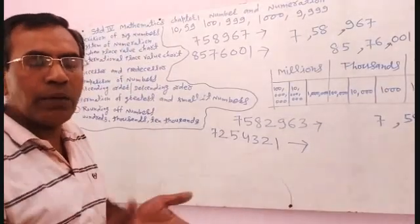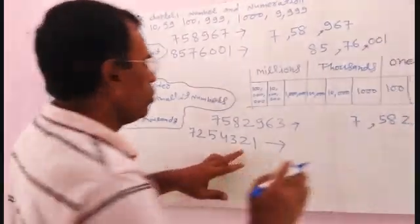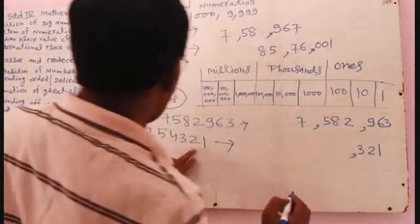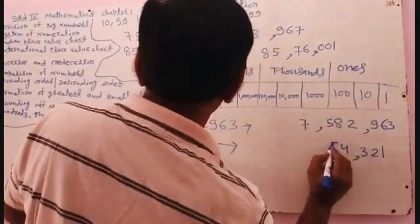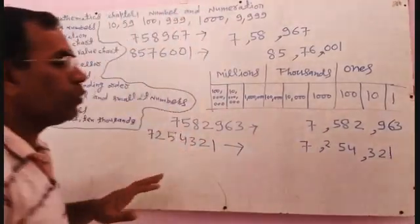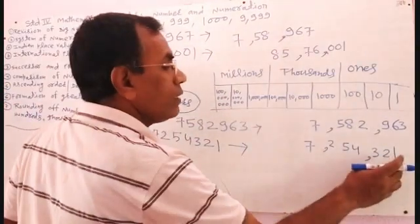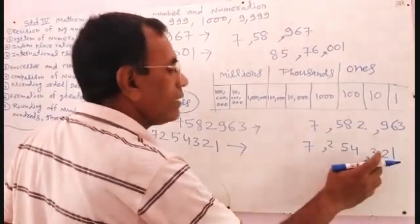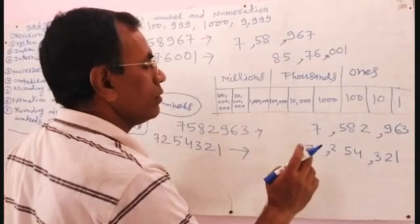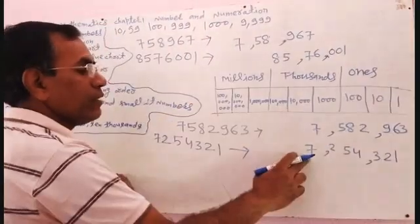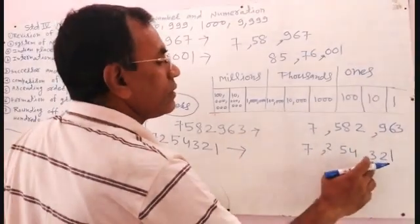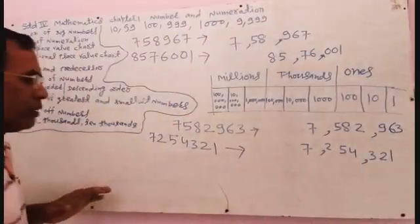First, write three digits from the right side, then three digits, and the remaining number you write. So: 1, 2, 3 — comma — 4, 5, 2 — comma — 7. Now you can read: ones, tens, hundreds; one thousand, ten thousand, hundred thousand; one million. So the number reads: seven million, two hundred fifty-four thousand, three hundred twenty-one.